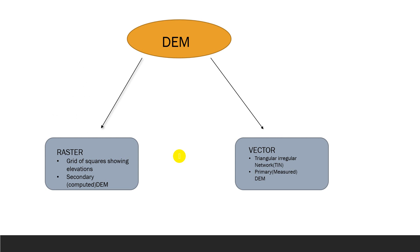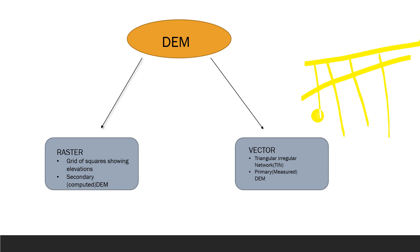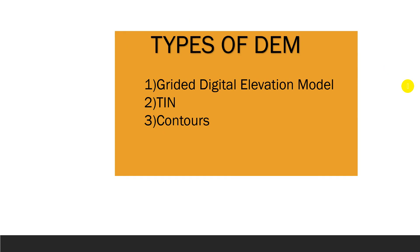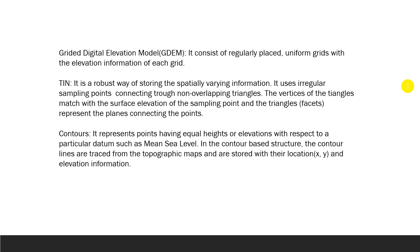A digital elevation model is divided into raster and vector types. Raster DEMs consist of a grid of square cells with elevation data. Vector DEMs are also known as Triangular Irregular Networks, or TIN. The types of DEMs are: first, gridded digital elevation model, also known as raster DEM; second, TIN, which is a vector DEM; and third, contour-based DEM.